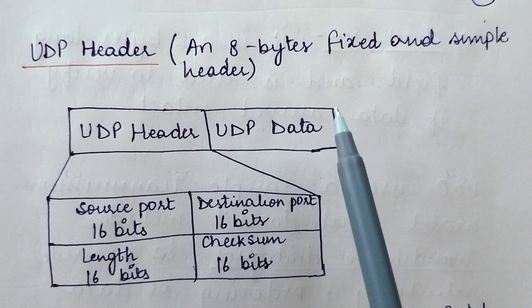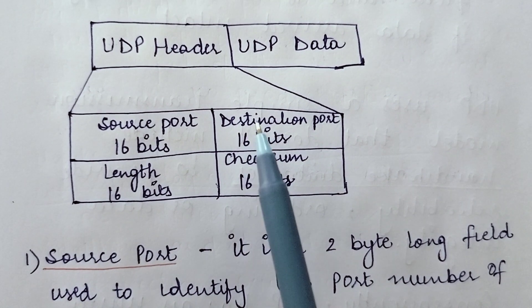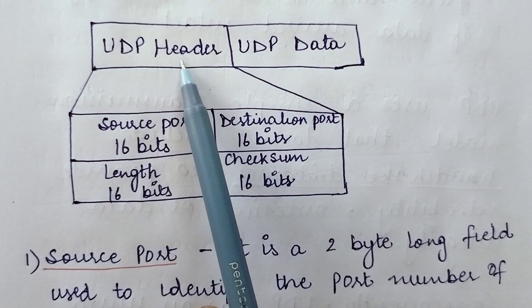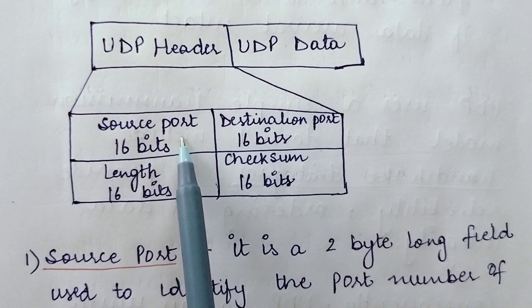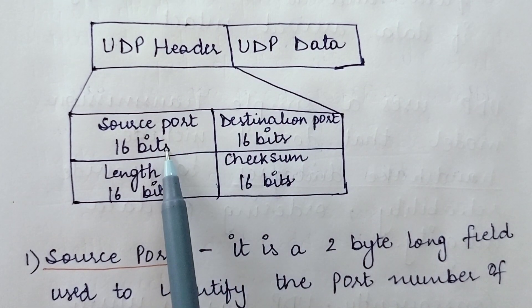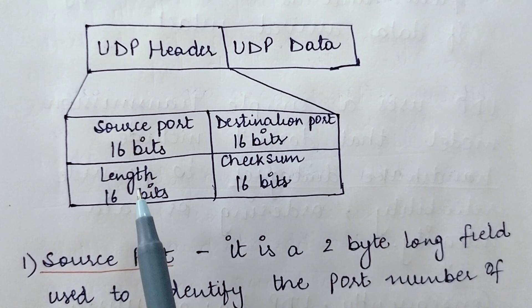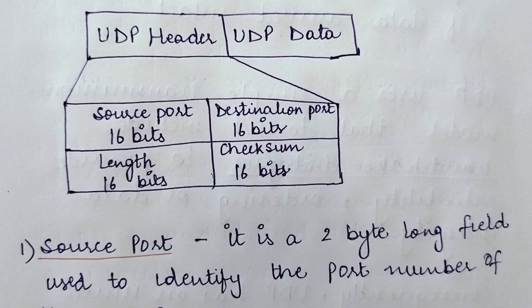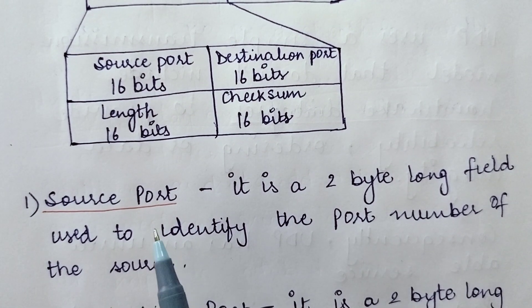Now let's look at the UDP header. A UDP header is not very complicated — it is a simple 8-byte fixed header. The UDP header contains four fields: the source port, which is 16 bits; the destination port, which is 16 bits; the length field, which is 16 bits; and the checksum field, which is 16 bits.